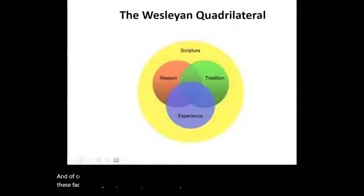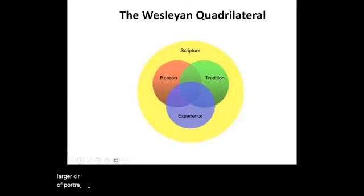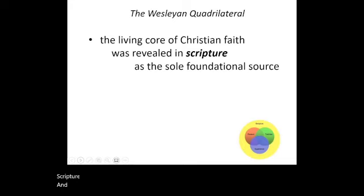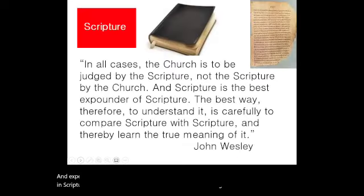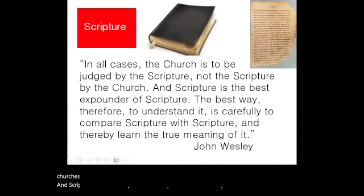An important modification to this model is that scripture actually sits over the other three — tradition, reason, and experience — shaping, informing, and guiding how we relate to tradition, how we use reason, and how we understand experience. Wesley said, 'The church is to be judged by the scripture, not the scripture by the church,' and 'scripture is the best expounder of scripture' — the best way to understand it is carefully to compare scripture with scripture.